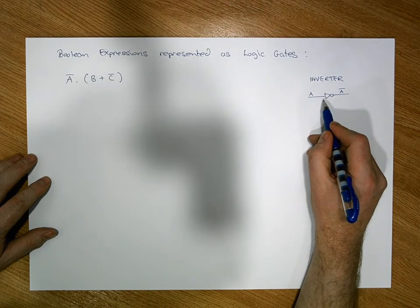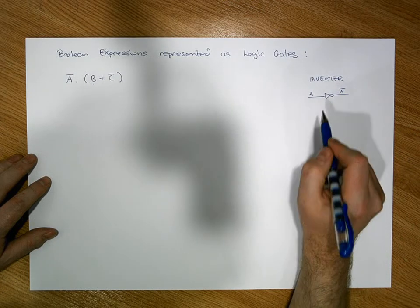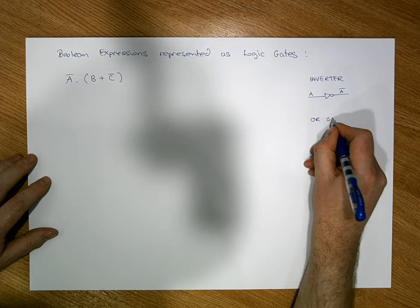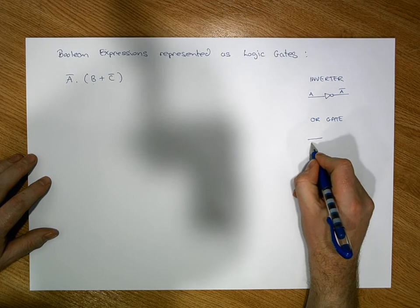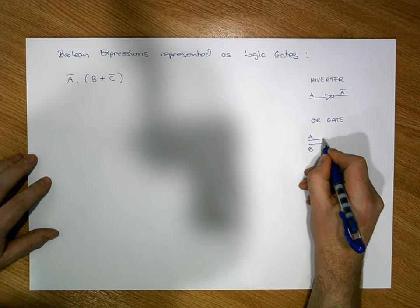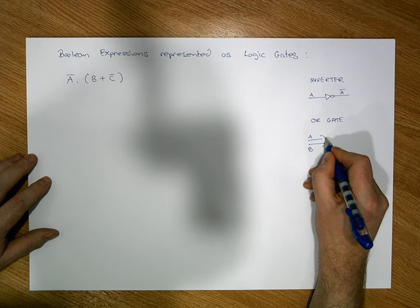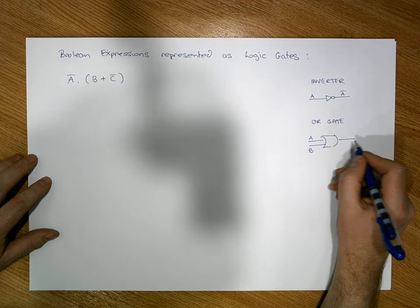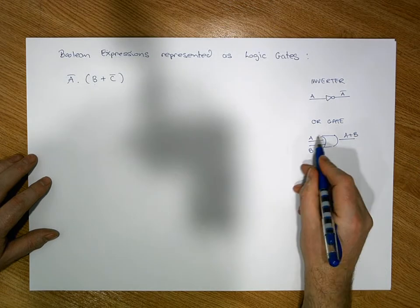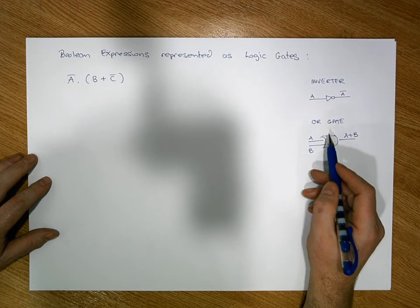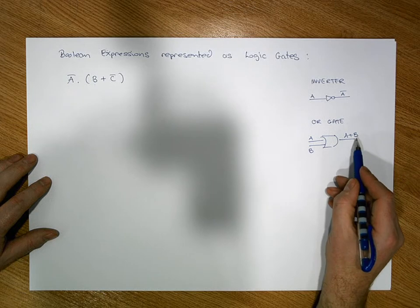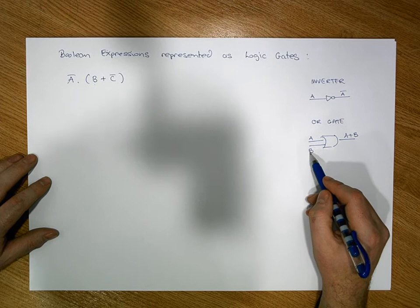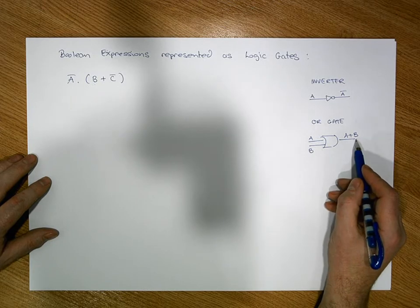Let's have a look at an OR gate. An OR gate takes two inputs, A and B, and it looks something like this with a curved line. It gives us A OR B out. The way an OR gate works: it only ever gives us zero when both inputs are simultaneously zero. So when A is zero and B is zero, the output will be zero. In all other cases, the output will be one.